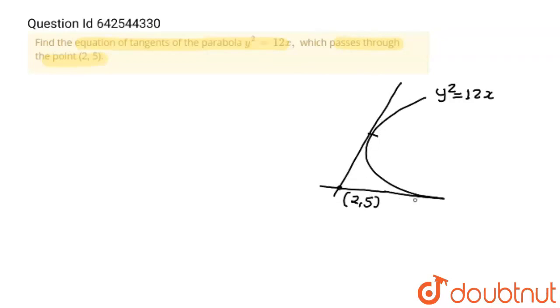One upward and one downward. We have all studied the concept that if a point is lying outside the parabola, then from that point two tangents are possible.